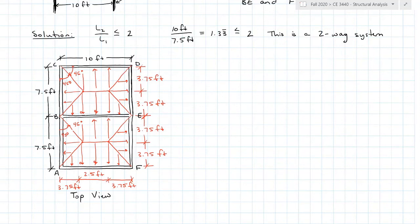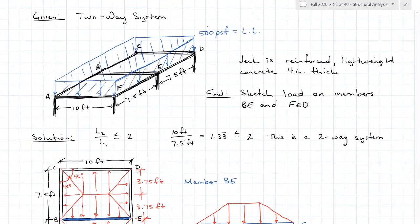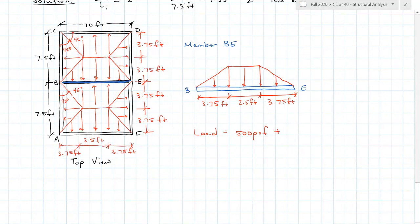Member BE receives a trapezoidal distributed load. Now that we know how the load distributes to BE, we need to determine the load magnitude. There is a dead load for the concrete and the given live load. The total load is the live load of 500 PSF plus the dead load of 8 PSF per inch times the 4-inch depth, giving 32 PSF, for a total load of 532 pounds per square foot for the system.